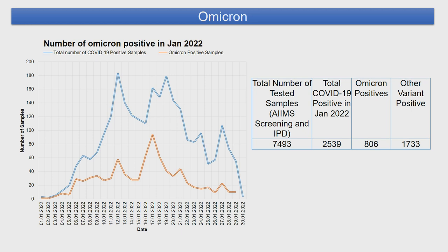Omicron was detected at our center. In January, 25,339 samples were positive for COVID, out of which Omicron was detected in 806 samples. We performed the S-gene target failure test and some of these Omicron cases have been confirmed by NIV Pune.